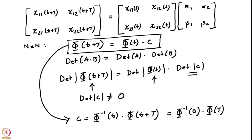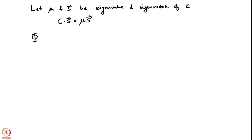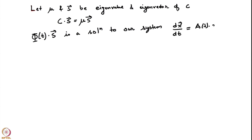Now let us move onwards to completing the proof of the Floquet theorem. We see that from the matrix C: this implies C·S = μ·S, since μ is a scalar. Note that φ(t)·S — the fundamental matrix evaluated at time t dotted with S — is a particular solution to our original system dx/dt = A·x.